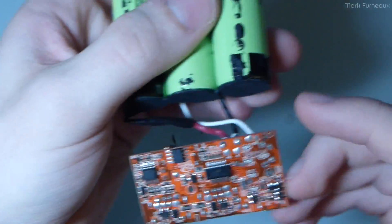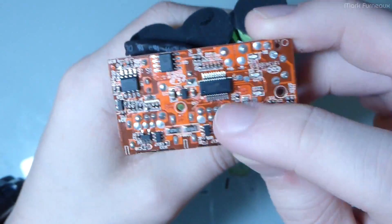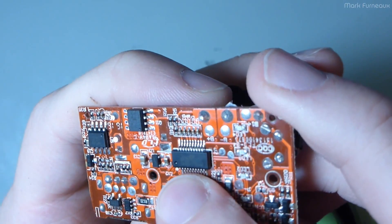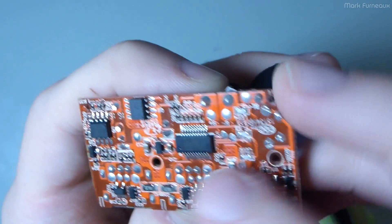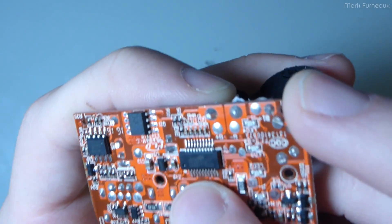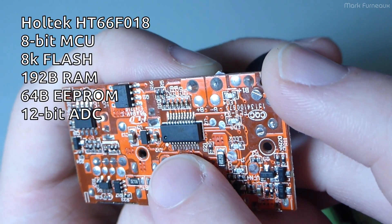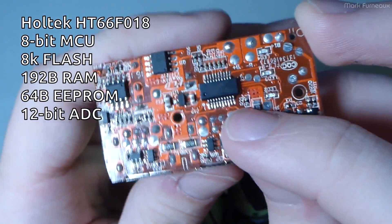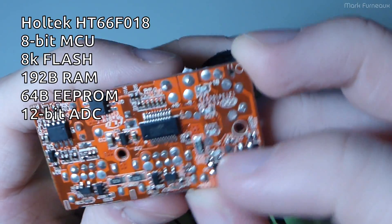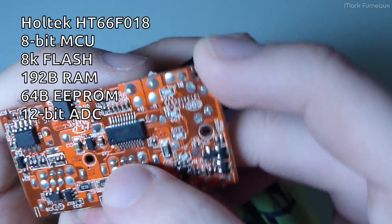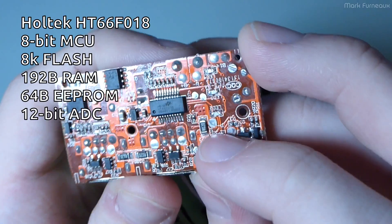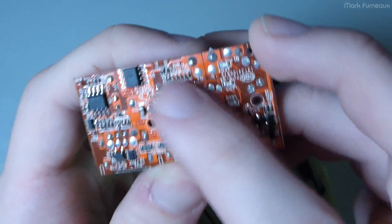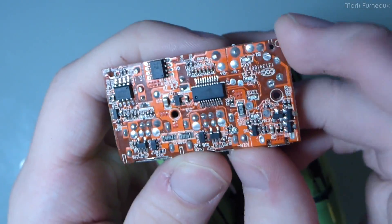But anyway, the controller, everything's on one board here. The main controller here is kind of no surprise. It's made by Holtec. They seem to have a lot of parts for things like multimeters, power banks, they've really kind of got that market cornered. This is a Holtec HT66F018. And that is an 8-bit microcontroller. Pretty standard clock speeds up to 20 megahertz, but they're probably not doing that. They're probably using some sort of internal oscillator. This thing, I think, has a 32 kilohertz internal oscillator. So they're probably running it at that.